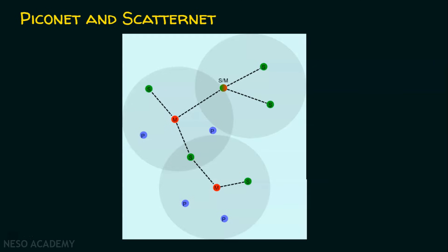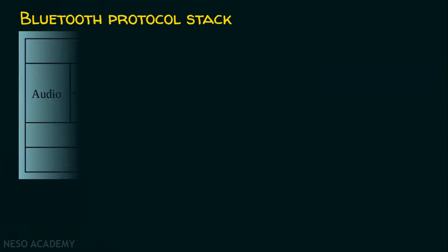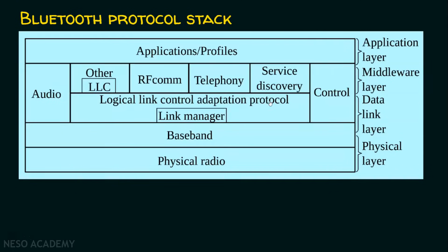Let's now see the Bluetooth protocol stack. We have various layers like the physical layer, data link layer, middleware layer, and finally the application layer. In this video lecture series, we are talking about computer networks in a bottom-up manner — that is, from the physical layer to the application layer. Likewise, in the topic Bluetooth protocol stack, we will deal with the bottom-most layer, the physical layer, and move towards the application layer.